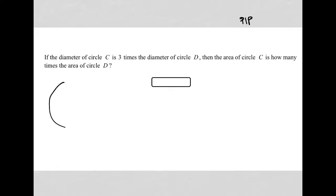So I'm going to draw circle C. We just want to represent what we're reading, and I'm going to draw circle D. I'm going to draw it smaller because the question tells us that circle C's diameter is three times that of circle D.